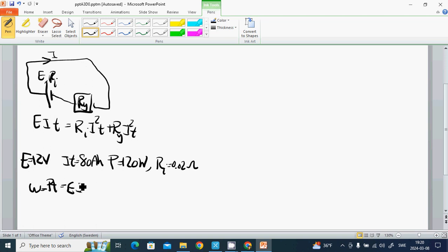Then I equals P divided by E, which is 10 amperes. Ui equals Ri times I, which is 0.02 multiplied by 10, which is 0.2 volts, very very less than 12 volts.